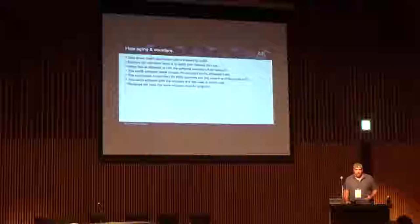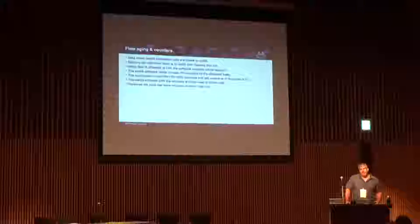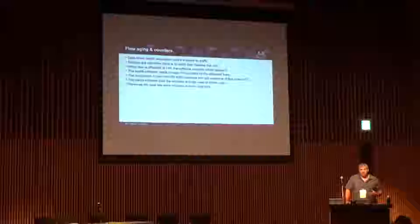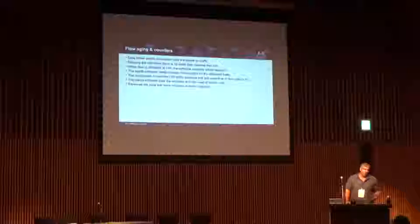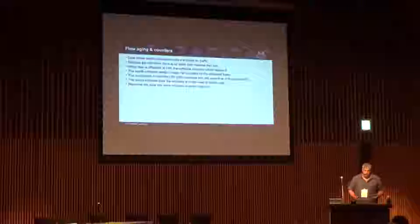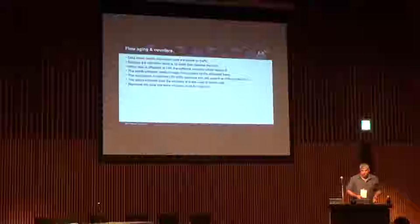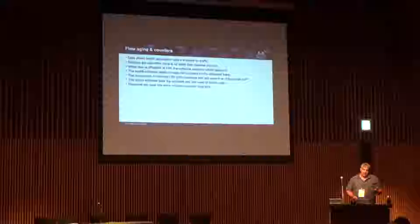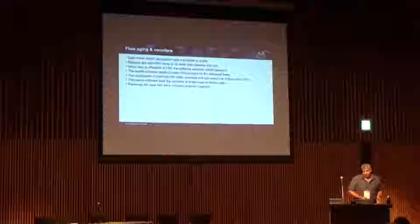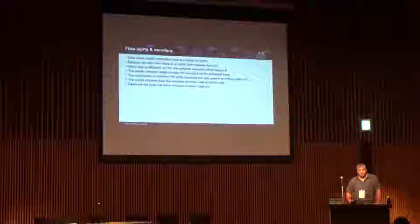Once we've added a flow into the hardware, when you have hardware offload you don't have any traffic on the slow path or the CPU. So if you try to do aging, you look at the counters and they show zero, because there's no traffic in the software — everything is going through the hardware. In order to handle aging, we collect counters from the hardware using TC, since it's the same interface we use to add rules and easily get statistics.